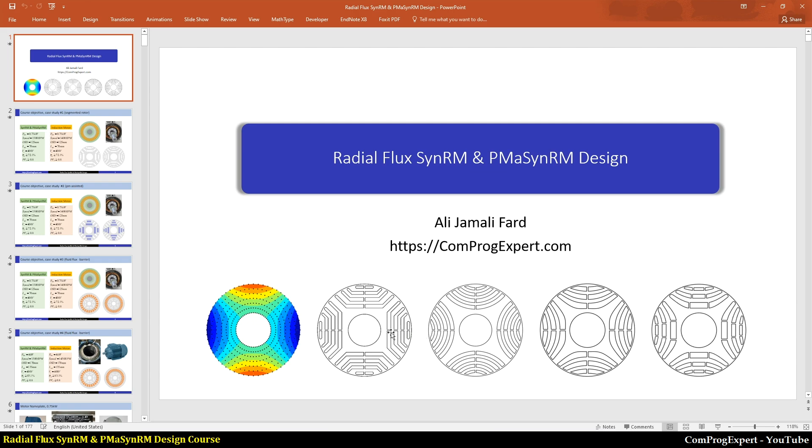We can propose a specified geometry. Here in this figure, you can see the geometry of flux barrier layers. We have a sequence of segments. Here we have predefined arcs. Here we use the fluid flow concept to get the maximum saliency ratio and to improve the average torque to get the maximum possible average torque.